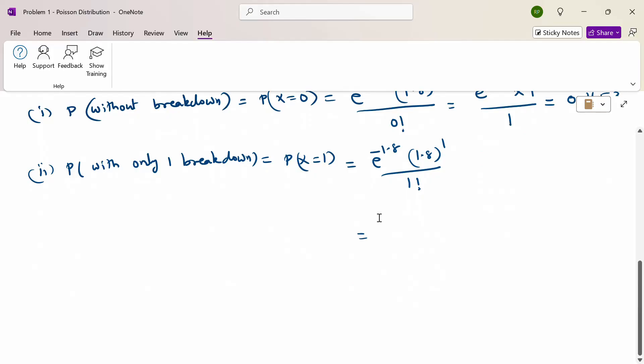Therefore, e power minus 1.8 times 1.8 by 1 factorial is 1. So when I calculate through calculator, e power minus 1.8 times 1.8 equals 0.2975. So this is the value for only one breakdown.